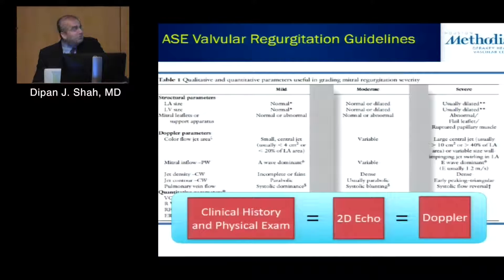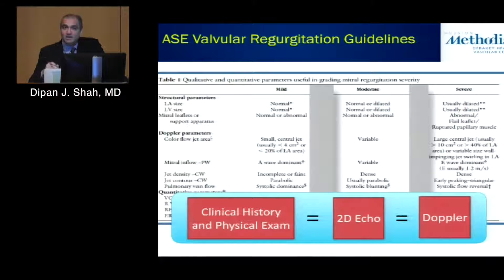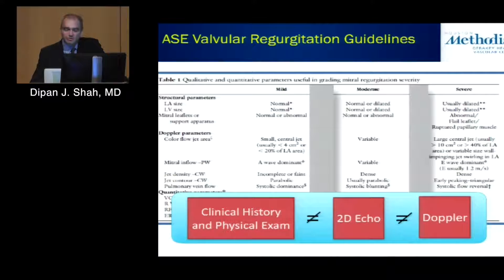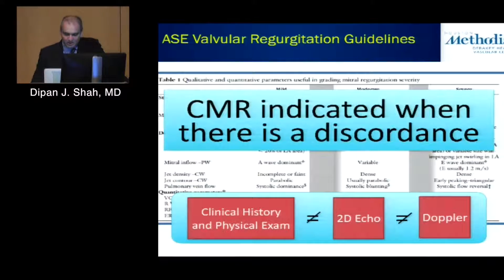The other important thing is you want to make sure that you have concordance between your physical exam and history, between the 2D echo findings as well as the Doppler findings. That's probably one of the key messages all the speakers have been trying to convey. What happens when you have a discordance? You have a huge ventricle but Doppler suggests mild MR, or the reverse — Doppler suggests severe MR but the ventricle is fairly normal in size.